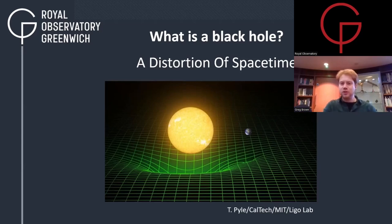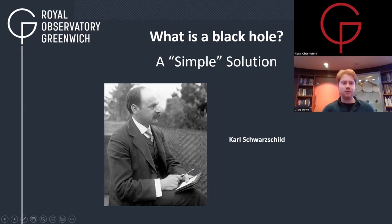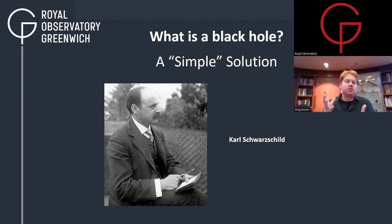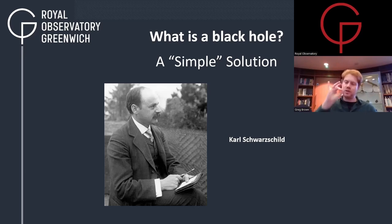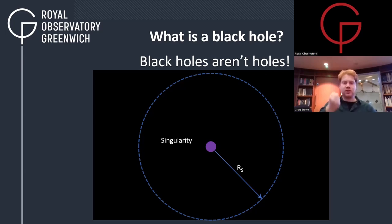Schwarzschild's solution to Einstein's equations produced a rather interesting effect. If you have a spherical mass — the simplest object — gravity behaves normally around it. But if you crush that mass down smaller and smaller, eventually gravity starts doing very strange things. There comes a point where you've crushed it so small that gravity takes over completely, and there becomes no force in the universe capable of stopping that gravity from crushing the object down to effectively nothing — what's called a singularity, a tiny infinitesimal point.